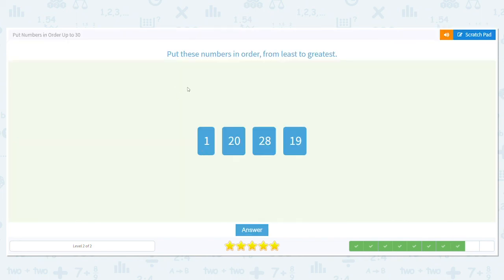Least to greatest again. Okay. Which one goes first? It's already there? The one. Then we have 20, 28, and 19. I see two in the 20s and one in the teens. So the teens go before the 20s. And then is it 20, then 28? Or is it 28 and then 20? Which one is lower? 20 is.